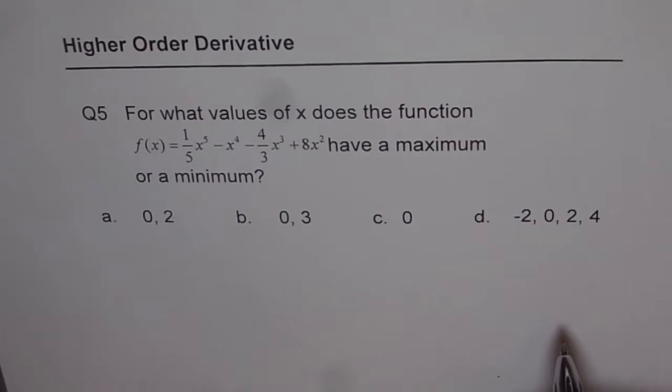To find the critical numbers, we should find the derivative and equate it to 0. At critical numbers we could have both maximum or minimum.